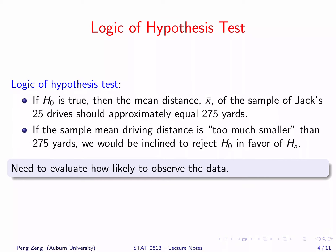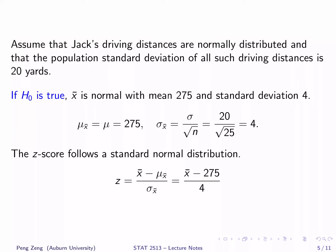The logic of the hypothesis test is that if H0 is true, the sample mean distance x-bar should approximately equal 275 yards. If the sample mean driving distance is too much smaller than 275 yards, we would be inclined to reject H0 in favor of the alternative. Here we need to evaluate how likely it is to observe a sample with a small sample mean such as 264.4 yards. Assume that Jack's driving distances are normally distributed and that the population standard deviation of all such driving distances is 20 yards.